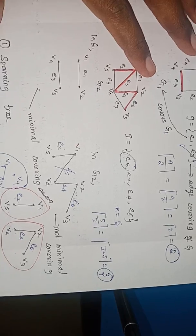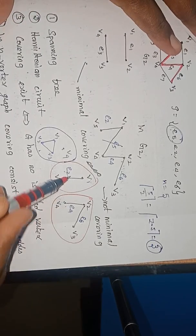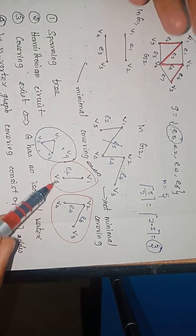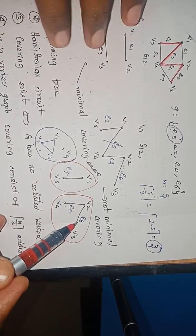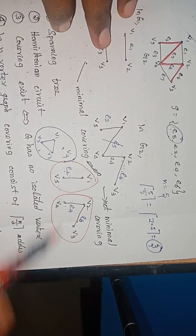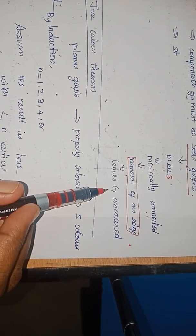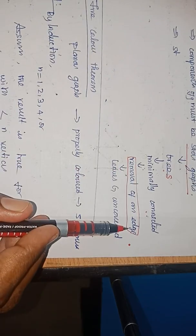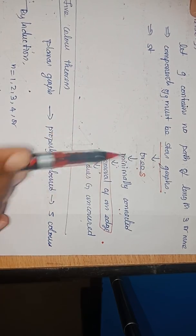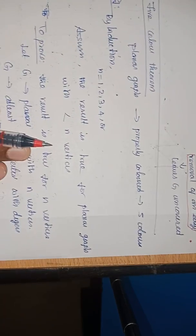If I remove E2, both V1 and V5 get isolated. If I remove E6, V3 becomes isolated. If I remove E4, V4 becomes isolated. So G becomes uncovered whenever I remove an edge, because the components of a minimal covering are star graphs. Therefore G is a minimal covering. Hence proved.